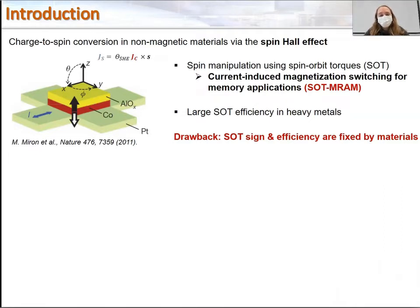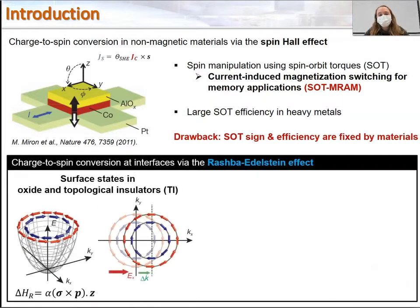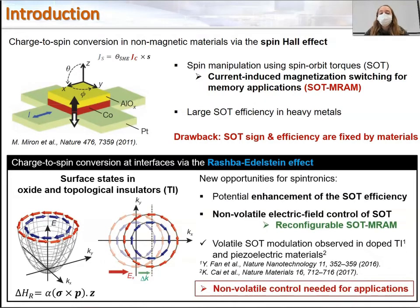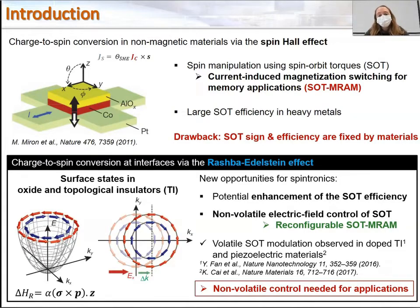In our team, we are interested in a different class of material: the 2D electron gases at the surface of oxide and topological insulators. In this system, the Rashba spin-orbit effect allows spin-orbit torque with potentially higher efficiency due to the confinement of the charge current in a very thin 2D interface. In addition, the possibility of controlling the 2D gas properties can be exploited to control electrically the SOT efficiency. However, achieving non-volatility will be a key requirement for bringing this to practical application.